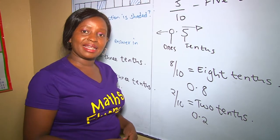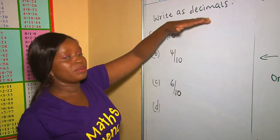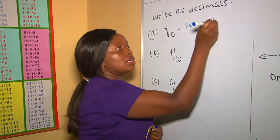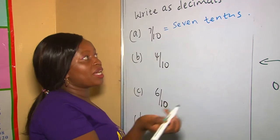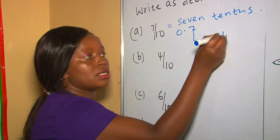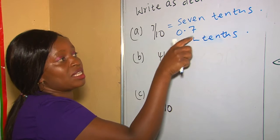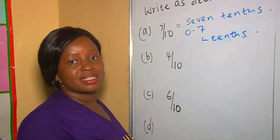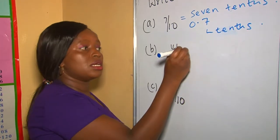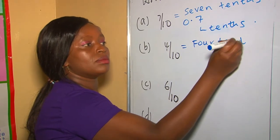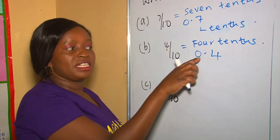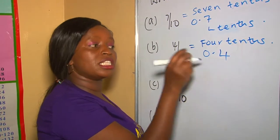In this question we have been told to write as decimals. Seven out of ten in words is 'seven tenths,' so the decimal is going to be 0.7. The place value of seven is tenths, so we say seven tenths. Our second example: four over ten in words is 'four tenths,' and as a decimal it is going to be 0.4. After the decimal point, the first digit's place value is always tenths.